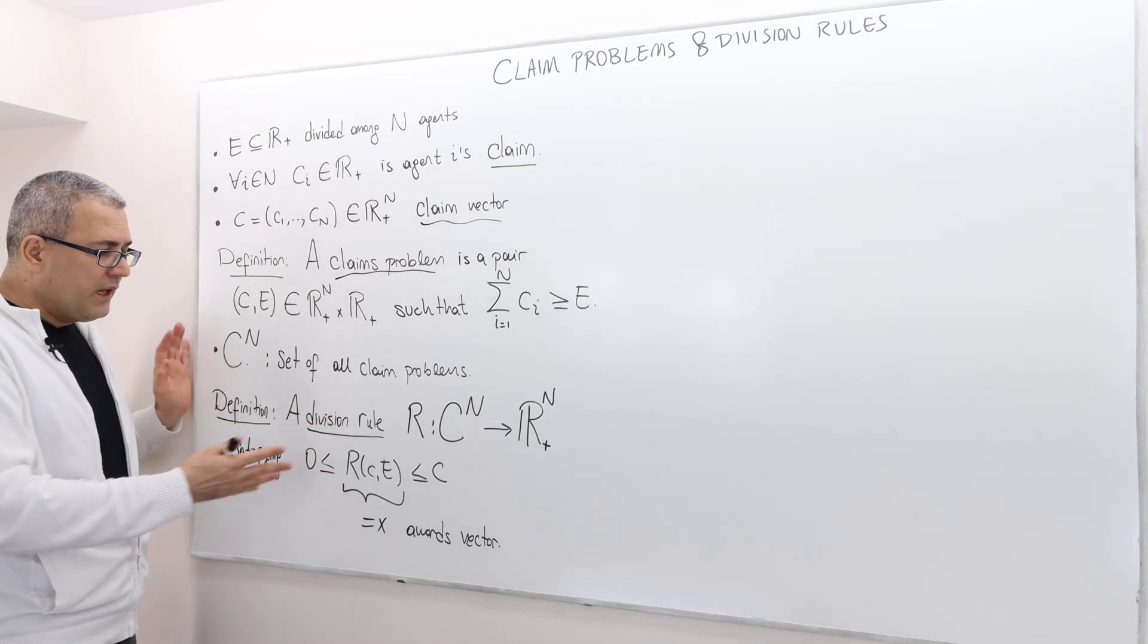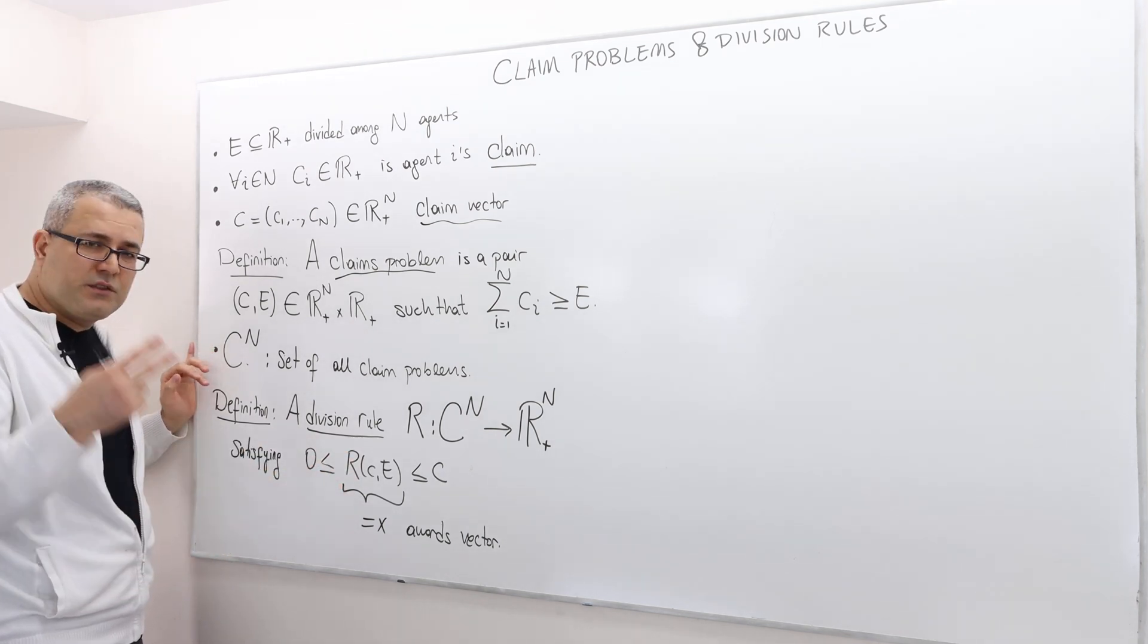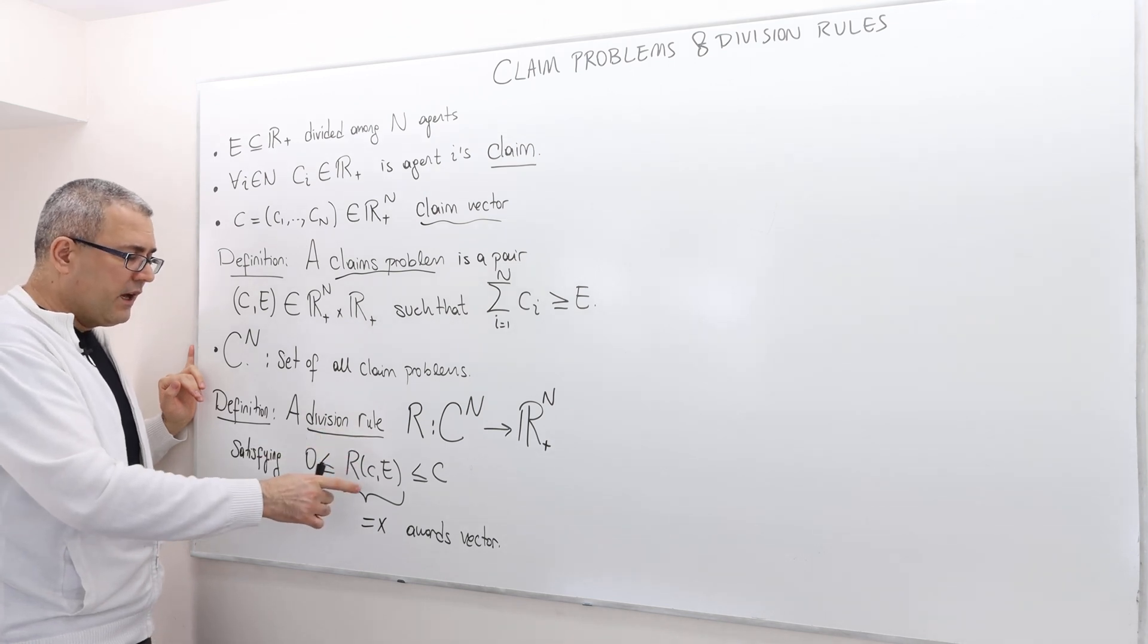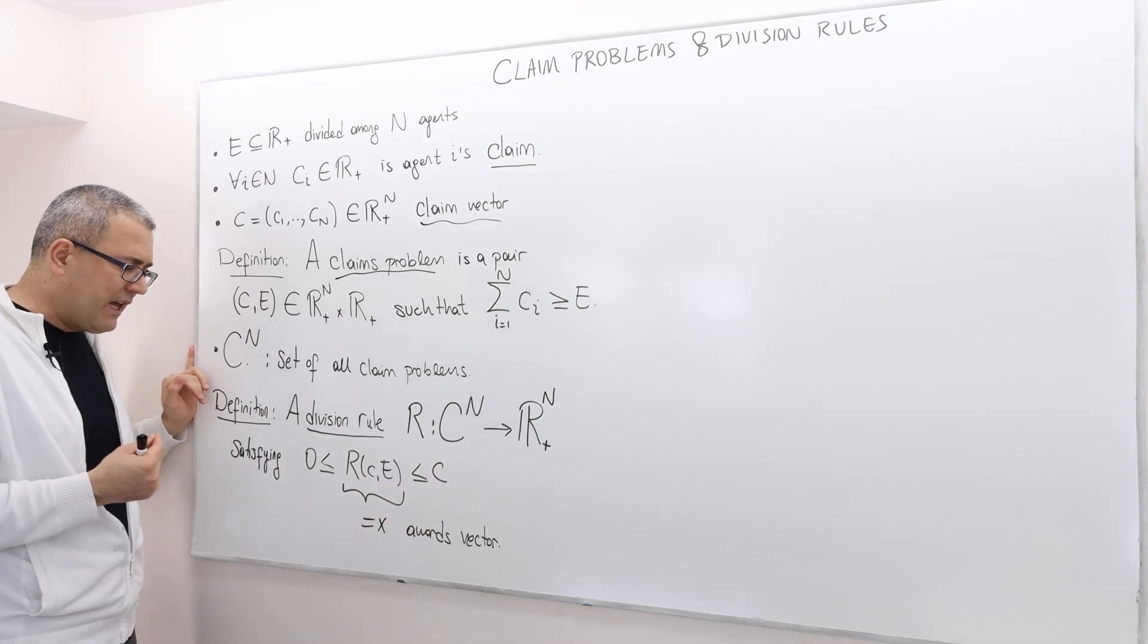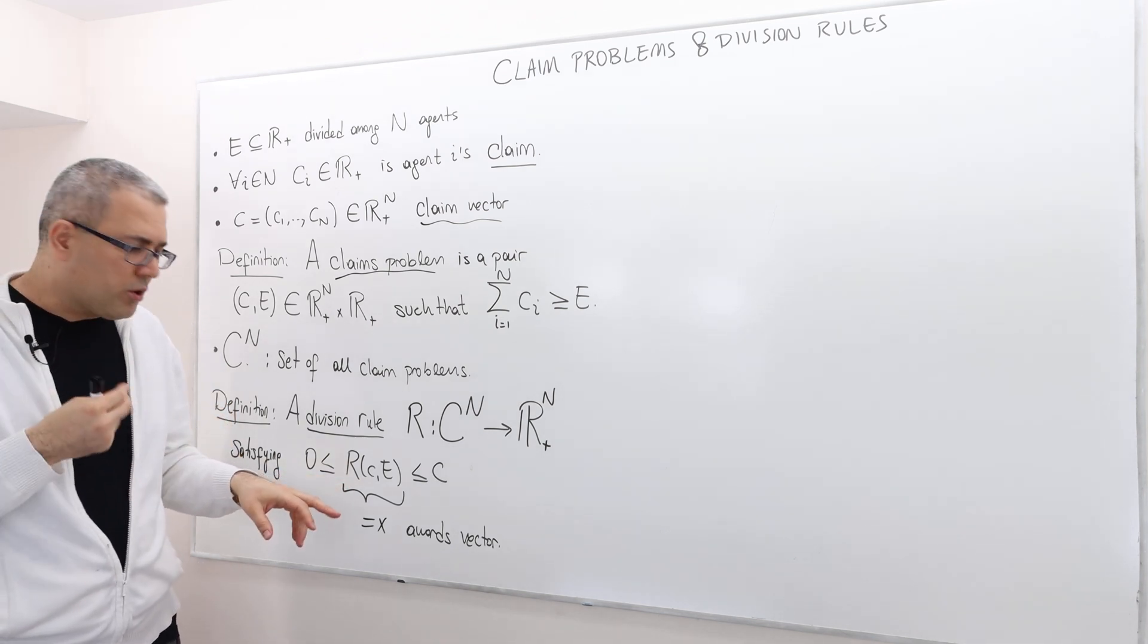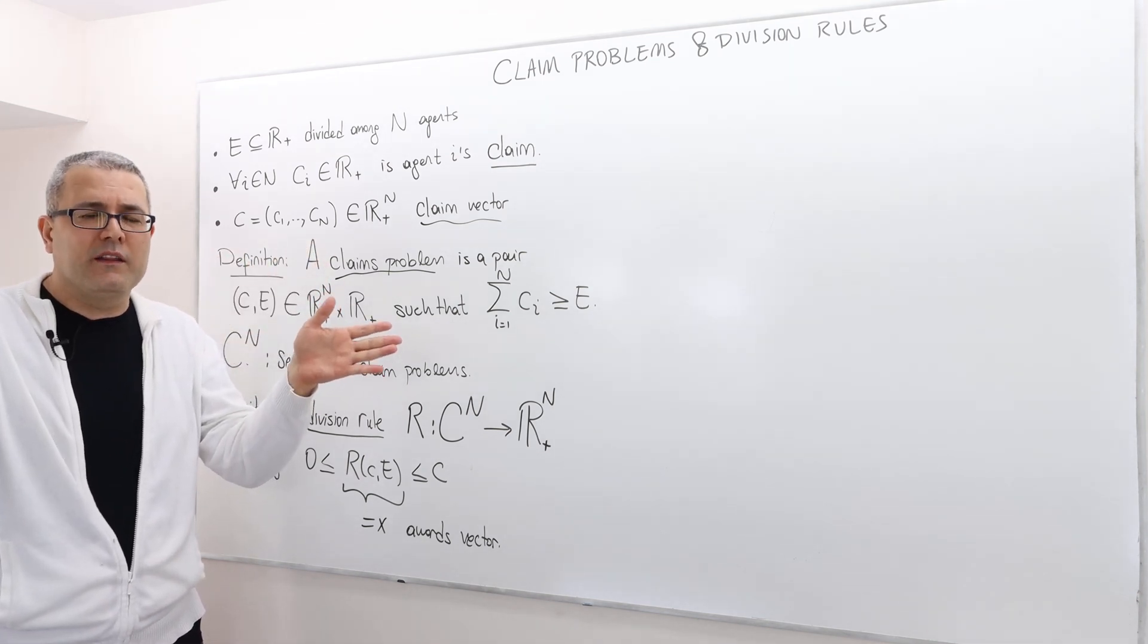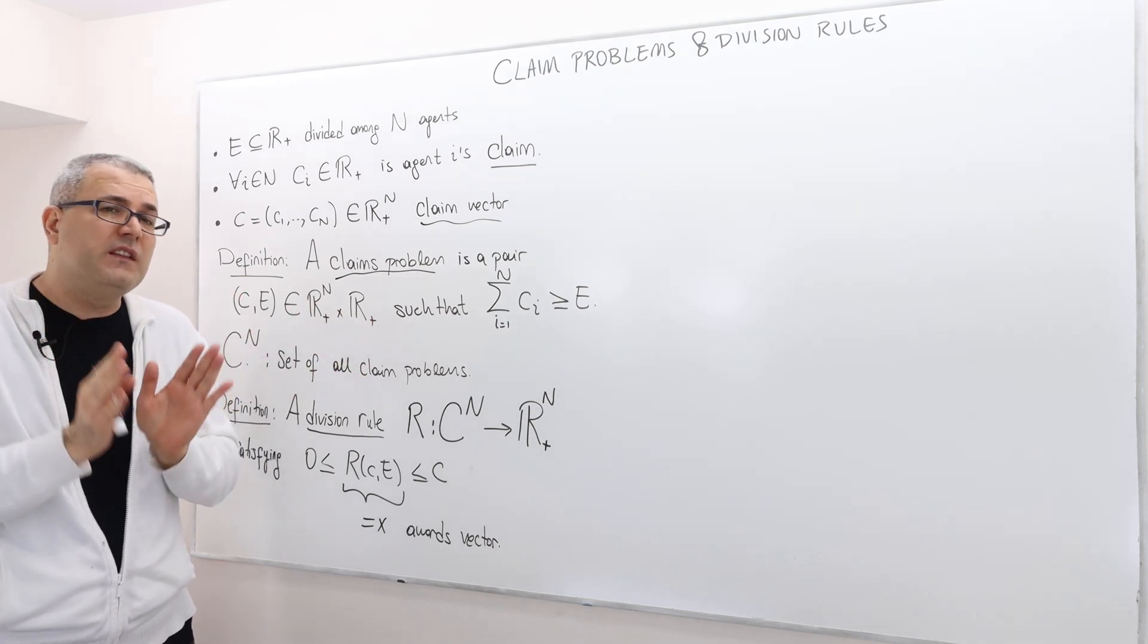Well here, it's not just a random function. It needs to satisfy two or, well, one inequality. What is that? Well for a division rule, has to be a number giving us a vector between 0 and C. So what does that mean? That means for each individual, for each agent, his award should be non-negative. I mean, you cannot say, Mr. X, you have to pay Mr. Y this much money. So Mr. X ends up with a negative surplus. This is not allowed. So everybody should get at least 0 surplus.